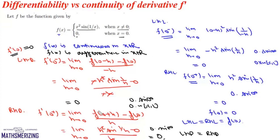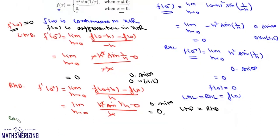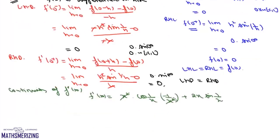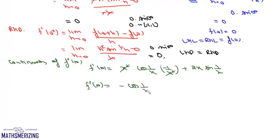Now we check continuity of f'(x). We find f'(x) by differentiating: x²·(−1/x²)·cos(1/x) + 2x·sin(1/x). The x² cancels, giving f'(x) = −cos(1/x) + 2x·sin(1/x) for x ≠ 0.